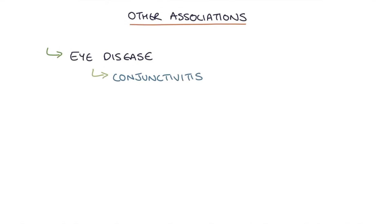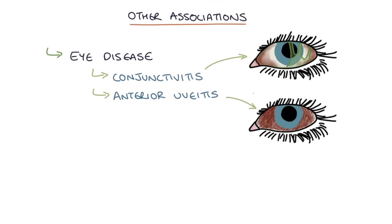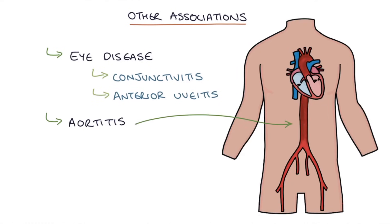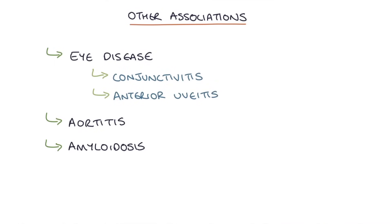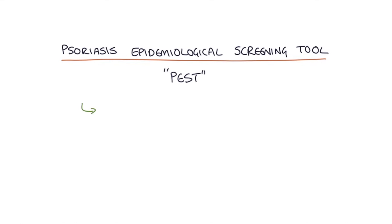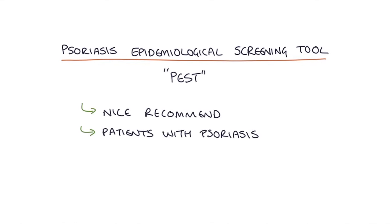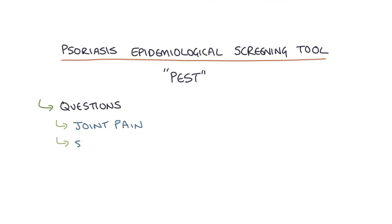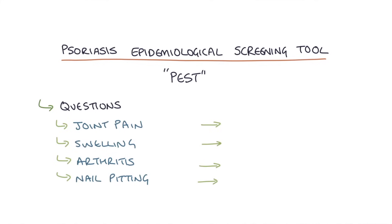There are a few other associations with psoriatic arthritis. One is eye disease, causing conjunctivitis and anterior uveitis. Another is aortitis — inflammation of the aorta, the large blood vessel coming out of the heart and travelling through the chest and abdomen. There is also an association with amyloidosis, where amyloid deposits accumulate throughout the body. For your exams, remember the Psoriasis Epidemiological Screening Tool, or PEST. NICE recommends that patients with psoriasis complete the PEST tool to screen for psoriatic arthritis, asking about joint pain, swelling, a history of arthritis, and looking for signs of nail pitting. A high score usually triggers a referral to a rheumatologist.